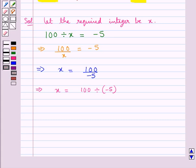Now when we divide two integers having unlike signs we divide their values regardless of their signs and we give a minus sign to the quotient.